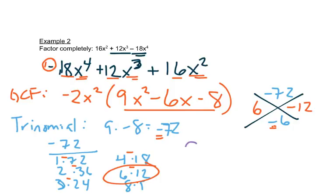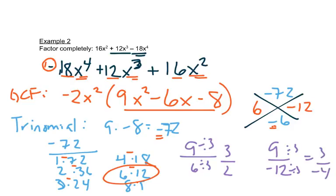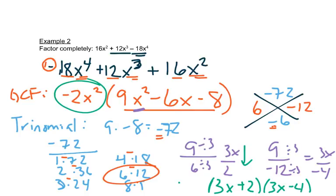Where our A is nine, so we'll put nine on top over six, and then nine on top over negative 12. So here I can divide by three, which gives me three over two. And here I can divide by three, which gives me three over negative four. This had an X squared, so these both have X's on top. So now we can write our answer, reading straight down, we have three X plus two, three X minus four. And that negative two X to the second that was out in front needs to stay out in front. And that's our answer.